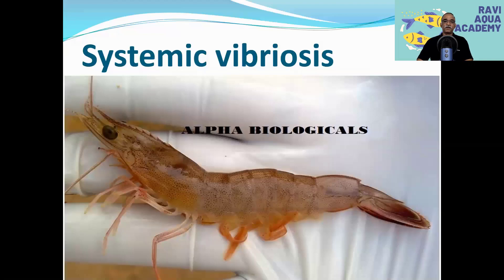This is the picture of shrimp with systemic Vibriosis. The body turns bright red in color. If you draw the hemolymph, clotting time will be delayed. In normal shrimp, hemolymph will clot within one minute, but in systemic Vibriosis hemolymph clotting is delayed. On the other hand, in most shrimps hemolymph is sterile — there won't be any Vibrio. But in case of systemic Vibriosis, if you plate it, you get Vibrio colonies on TCBS agar.